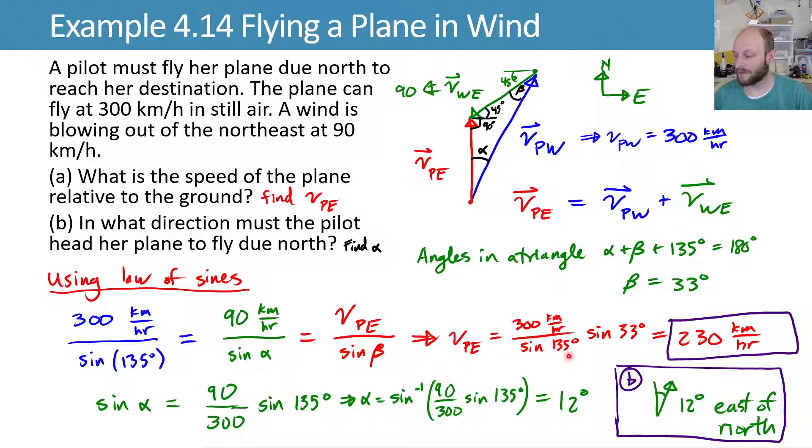So the speed of the plane relative to the ground ends up being 230 kilometers per hour. And that's because the wind is slowing us down. So relative to the air, we're still moving at 300 kilometers per hour. But relative to the ground, the plane is moving at 230 kilometers per hour.